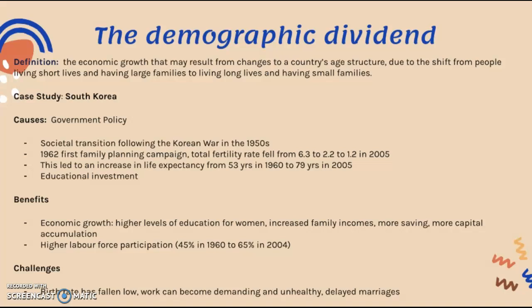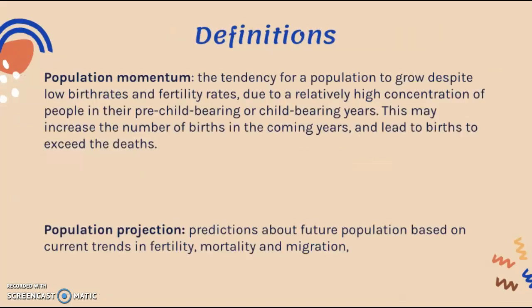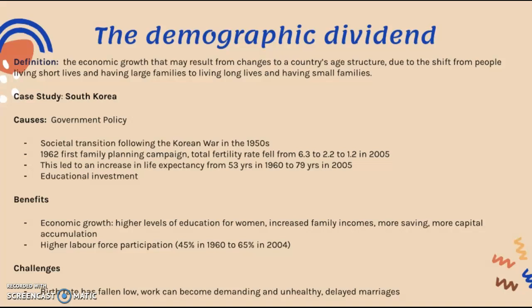However, there are challenges: since the birth rate has fallen very low, work for parents or work in general may become demanding and unhealthy for individuals, marriages are delayed, and these factors may all contribute to the negative impacts of an aging population. That's what you need to know for the demographic dividend — the definition, key terms, and a case study example to use in your exam.